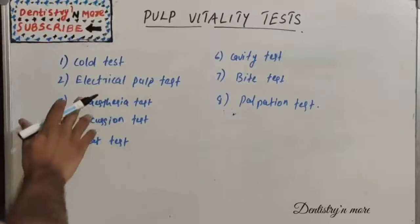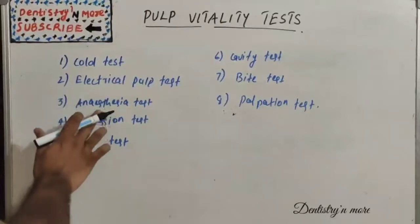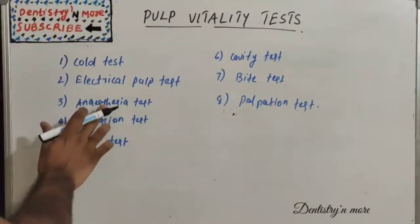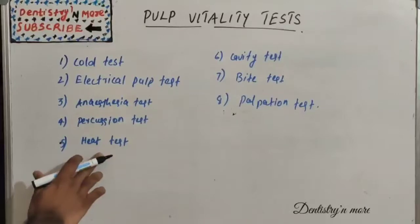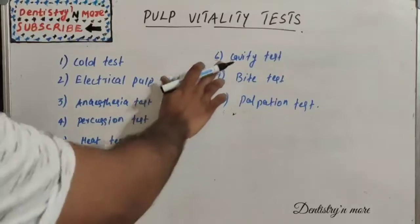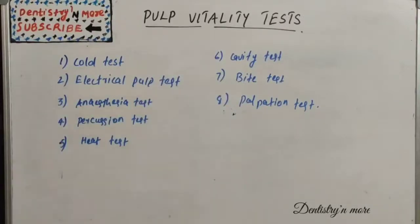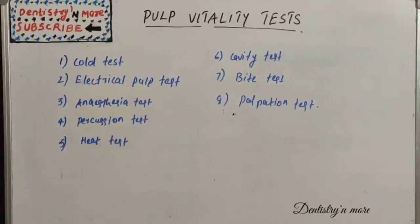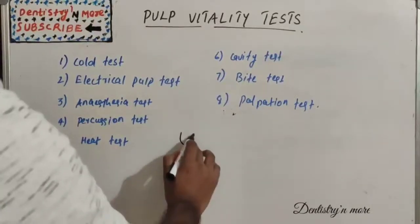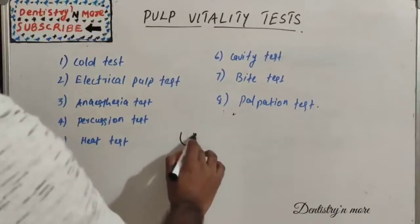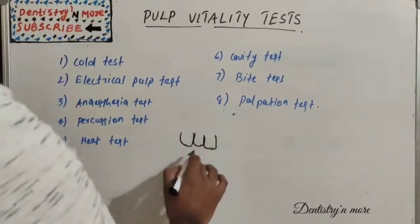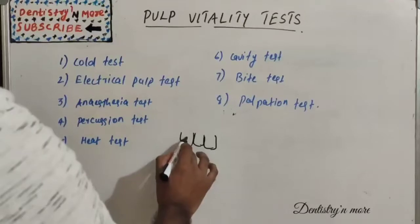Now let's learn the pulp vitality tests one by one. The tests we have are: cold test, electrical pulp test, anesthesia test, percussion test, heat test, cavity test, bite test, and palpation test. We'll start with the cold test — suppose we have a suspected tooth and we are checking its vitality using a cold stimulus.